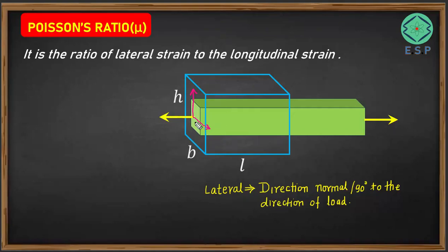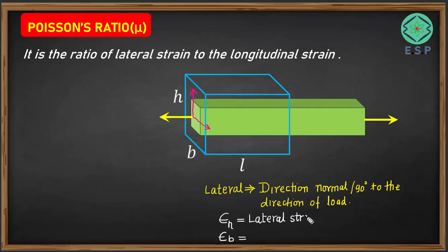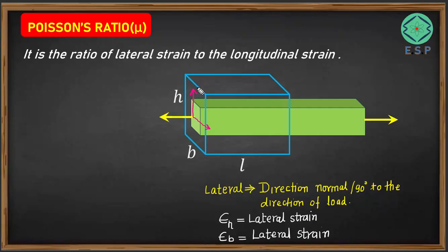Here we have two lateral strains. One is the strain in the height — the strain in the height is a lateral strain — as well as the strain in the breadth is also a lateral strain. Both are lateral strains because the load is applied along the length. Strain developed in the height is lateral and strain developed in the breadth is also lateral. So here we have two lateral strains: one in the height and another in the breadth of the member.